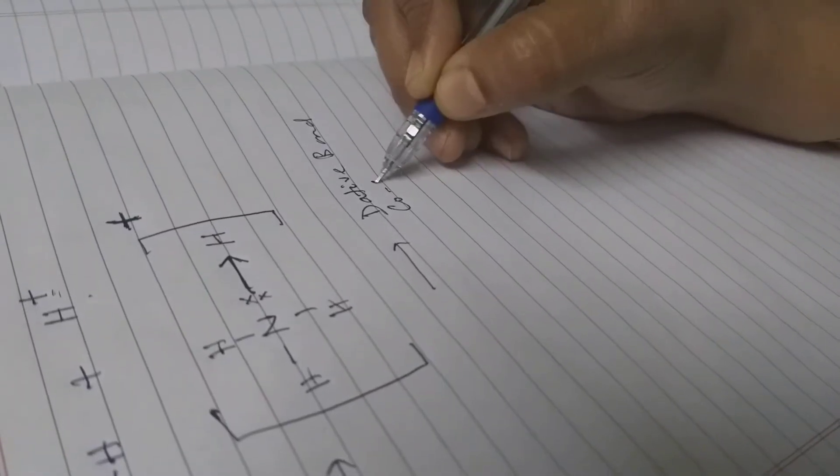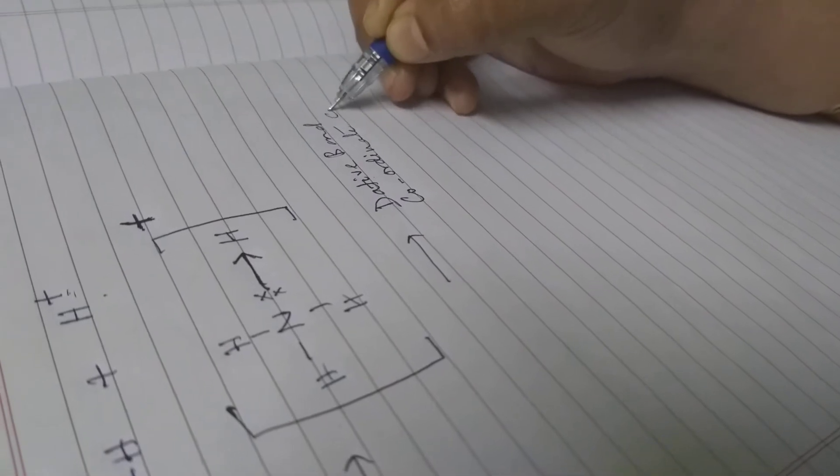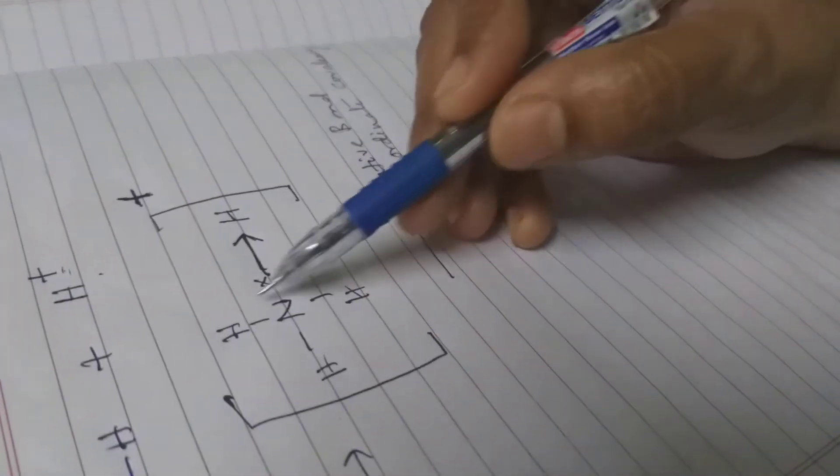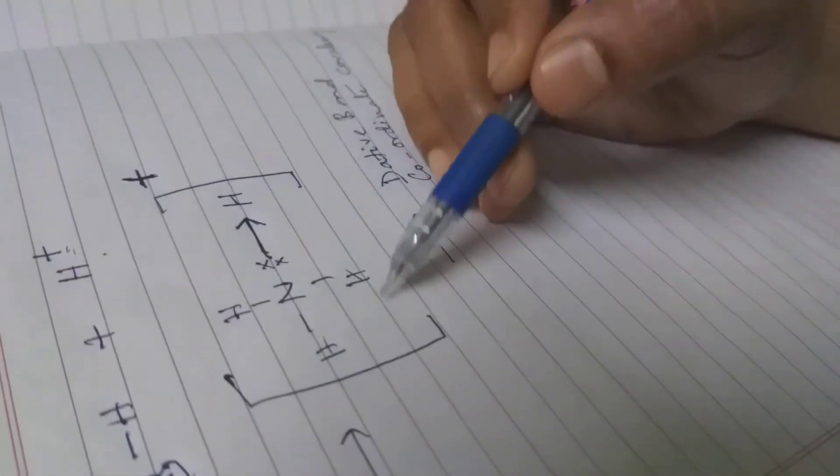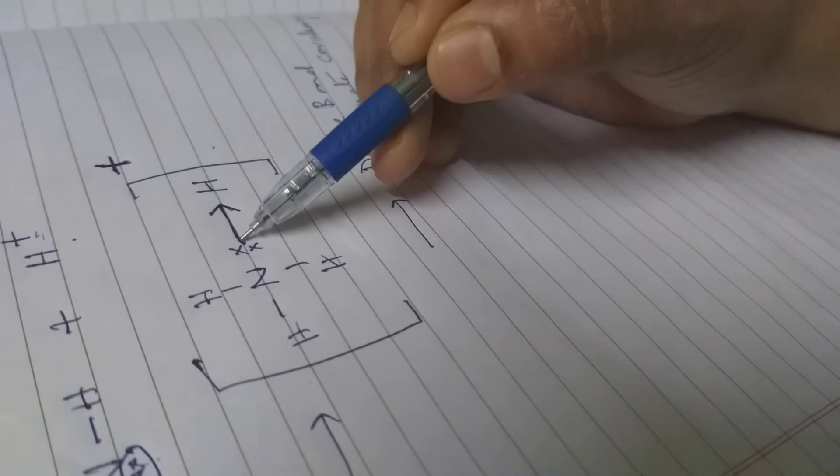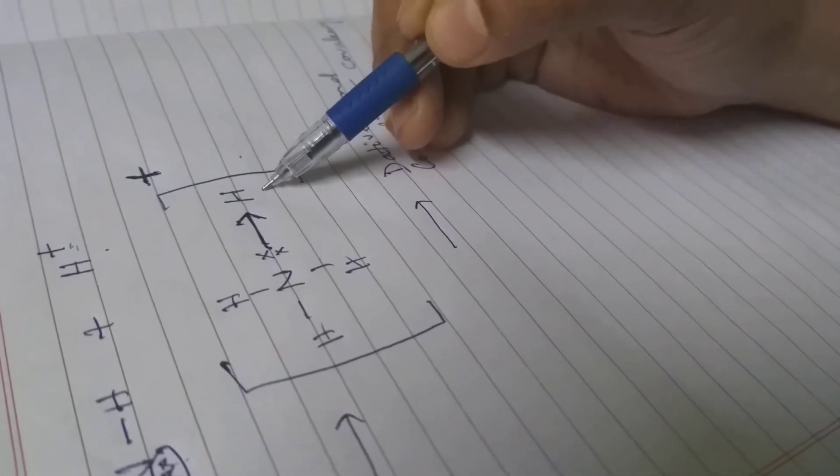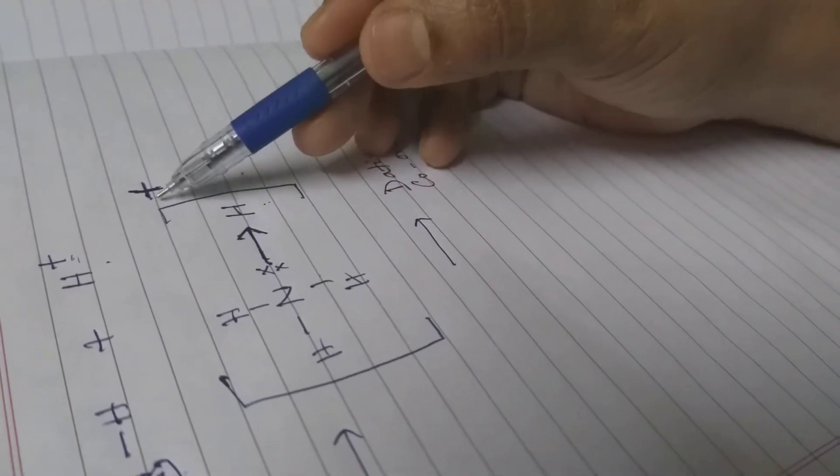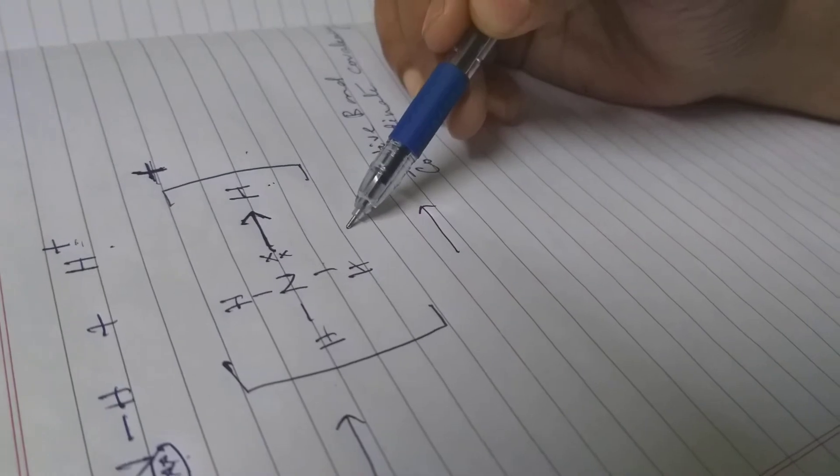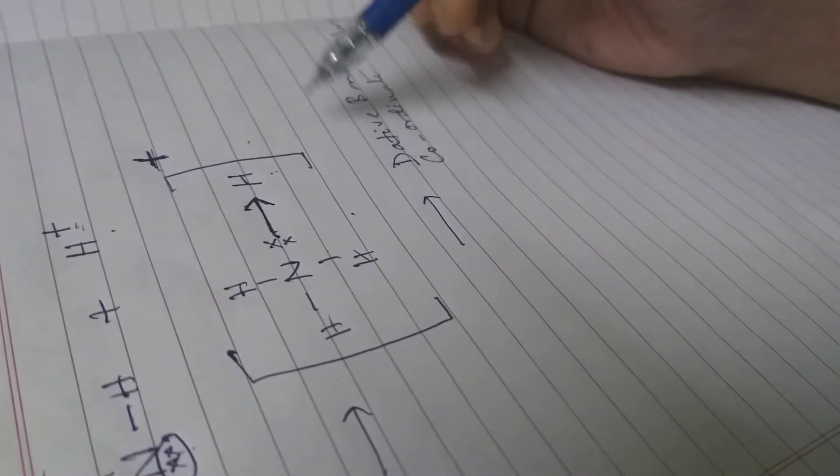Dative bond or coordinate covalency means partially there is sharing to form ammonia molecule, then from ammonia to ammonium ion there is a transfer of a pair of electrons to this electron deficient species and the charge is balanced to give stability to this ammonium ion.